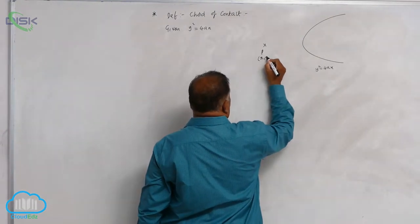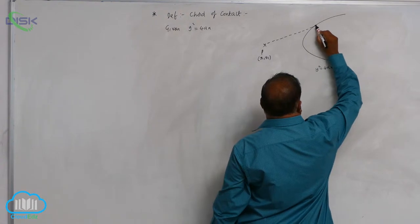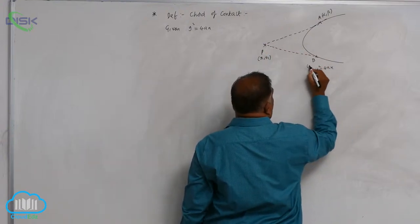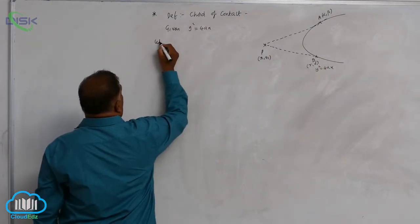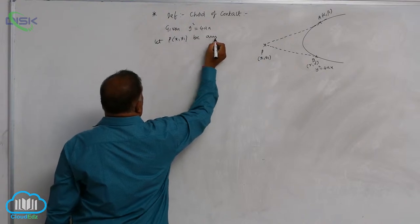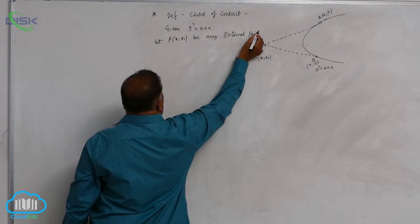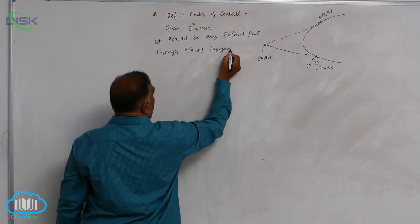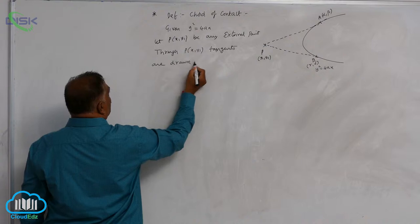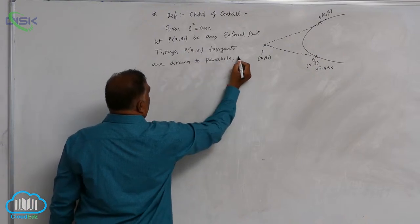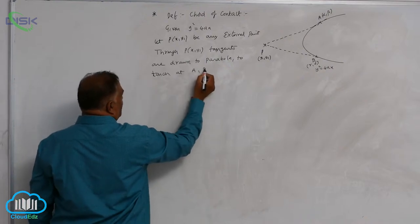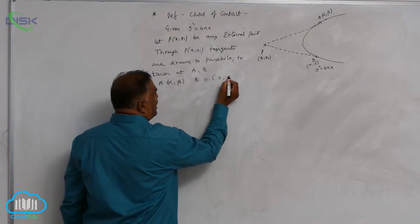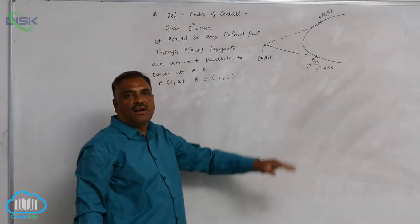Let us consider point P(x1, y1). Through P, tangent line 1 touches the parabola at A(α, β), and the second tangent line from P touches at B(γ, δ). So let P(x1, y1) be any external point. Through P(x1, y1), tangents are drawn to the parabola to touch at A and B. We observe that A(α, β) and B(γ, δ) are points on the curve.